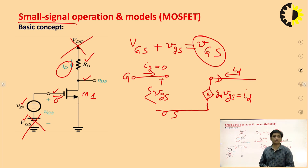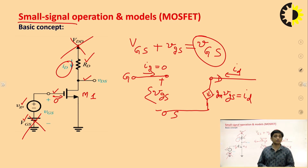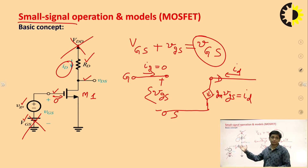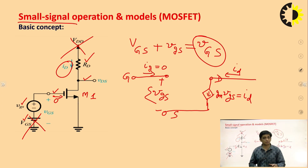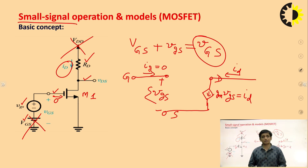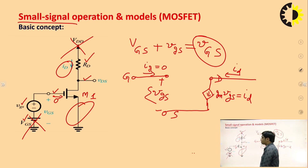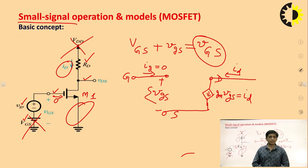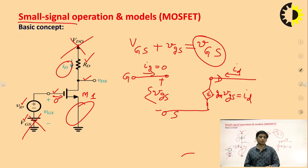When we draw the small signal model, we can do so by two methods: one is the hybrid pi model and the other is the T model. If there is a resistance connected at the source terminal, it is convenient to use the T model. If there is no resistance connected at the source terminal, it is better to draw the hybrid pi model. Although we can draw any model, it is all about convenience.